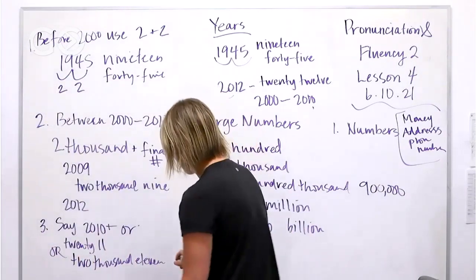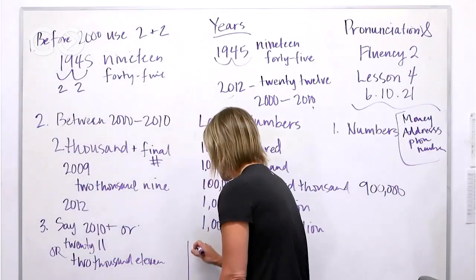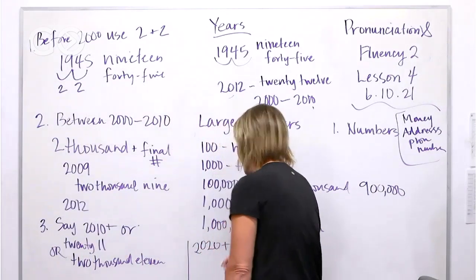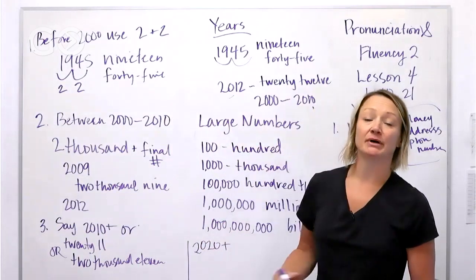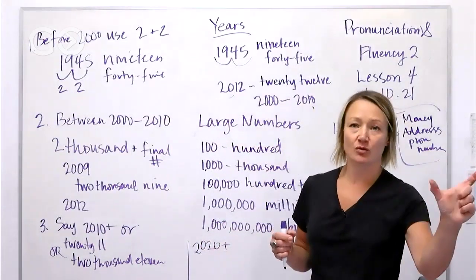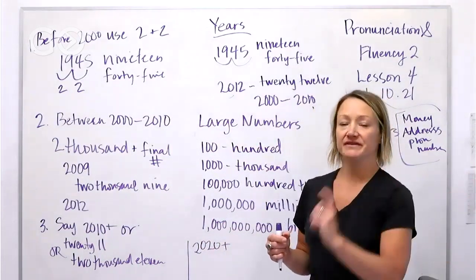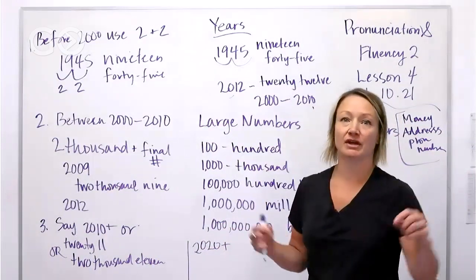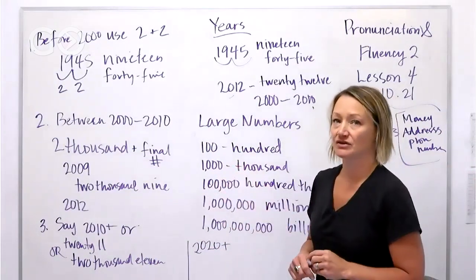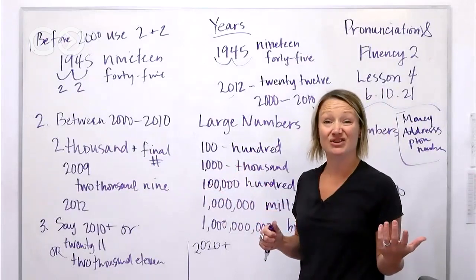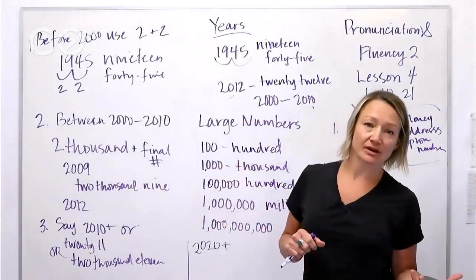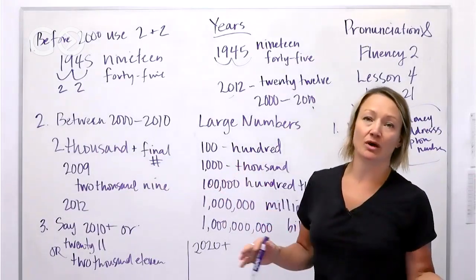Once you get to 2020 and above, you're really just going to say 'twenty' and then the second part. So 2021, 2022, 2030, 2040, 2045 — most people are going to say 'twenty twenty-one' for the current year.